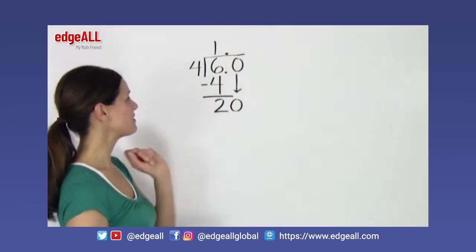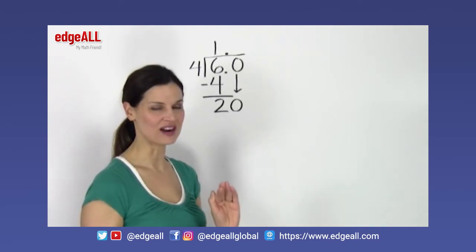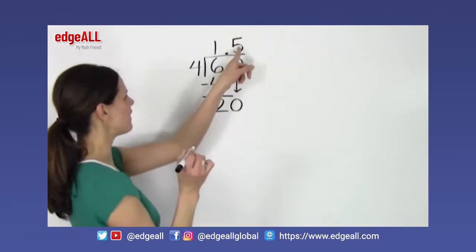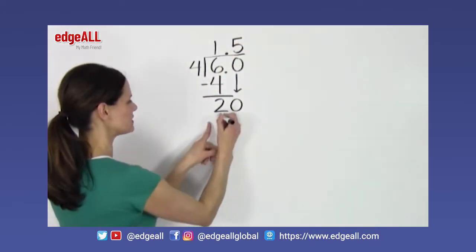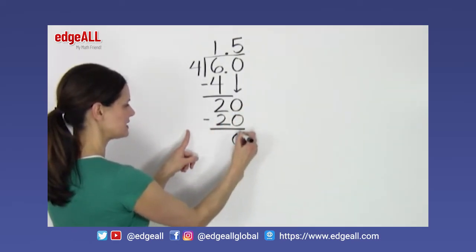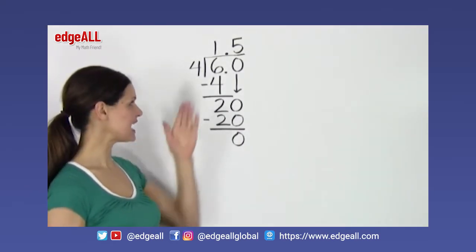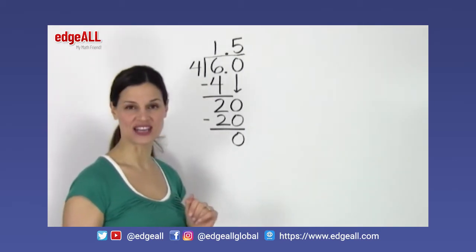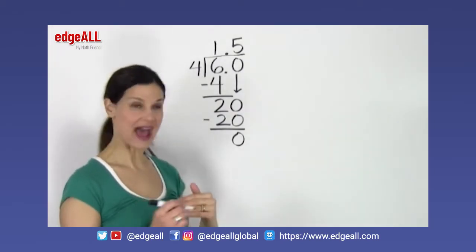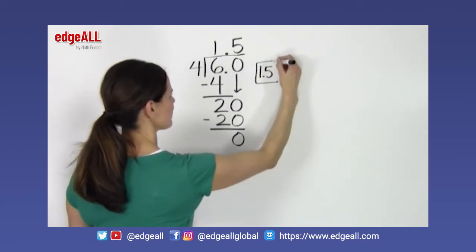The largest whole number I can multiply by 4 to get a product less than or equal to 20 is 5. So 5 times 4 equals 20. I place the 20 here, subtract it from this 20, and the answer is 0. That remainder of 0 tells me I am finished with my calculation — I have found a solution to 6 divided by 4. The solution is 1.5, which I report as my answer.